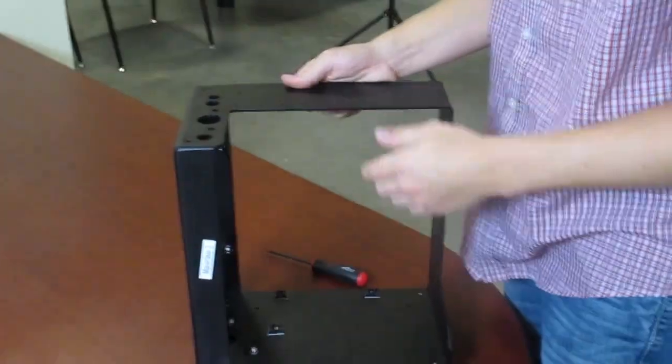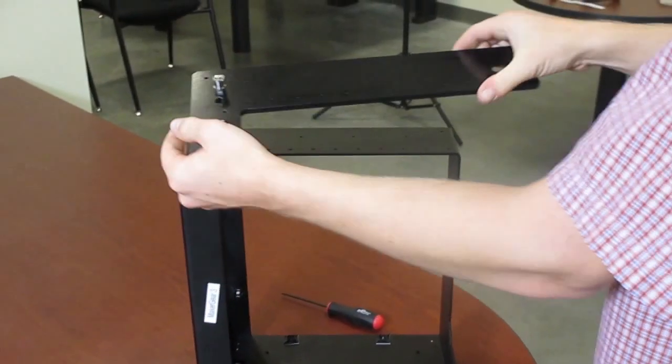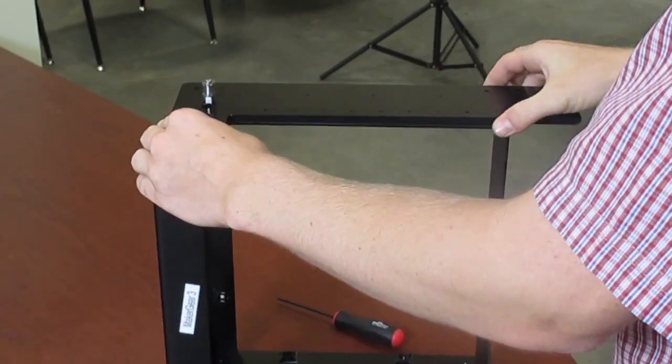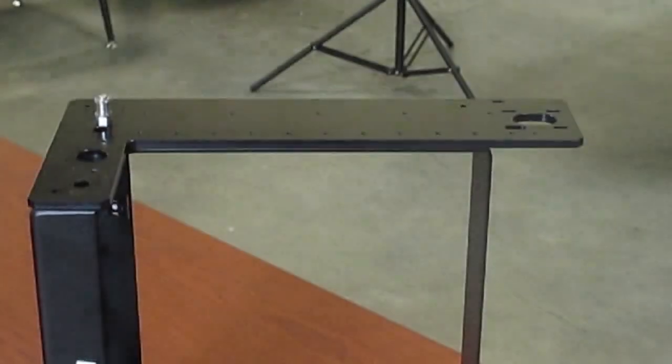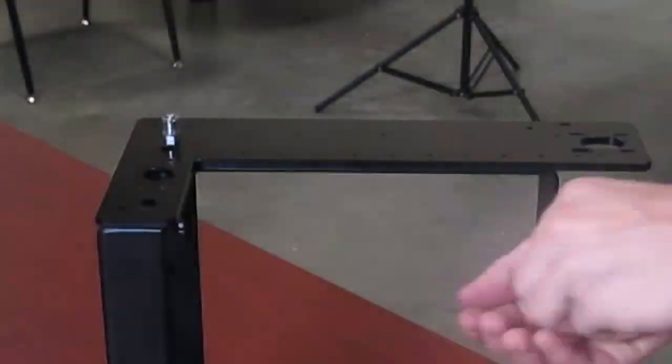Now for the top plate. The top plate is this piece. It sits right on top and secures with three M4x16 black oxidized bolts. Grab your bolts with three washers and three M4 lock nuts.